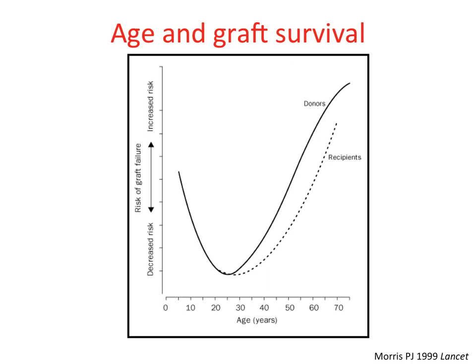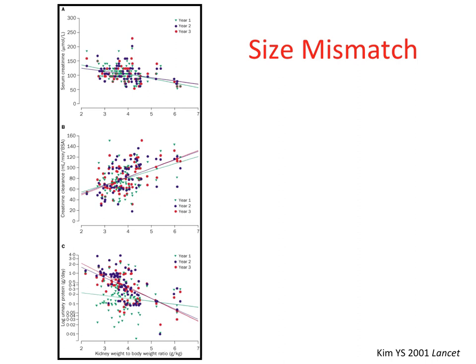Another input or load factor is the relationship between the size of the kidney and the size of the recipient. The first group to analyze this systematically was South Korean: they weighed all kidneys transplanted and expressed the ratio of kidney weight to recipient body weight. The higher this ratio, the lower the serum creatinine, the higher the creatinine clearance, and the lower the level of proteinuria.